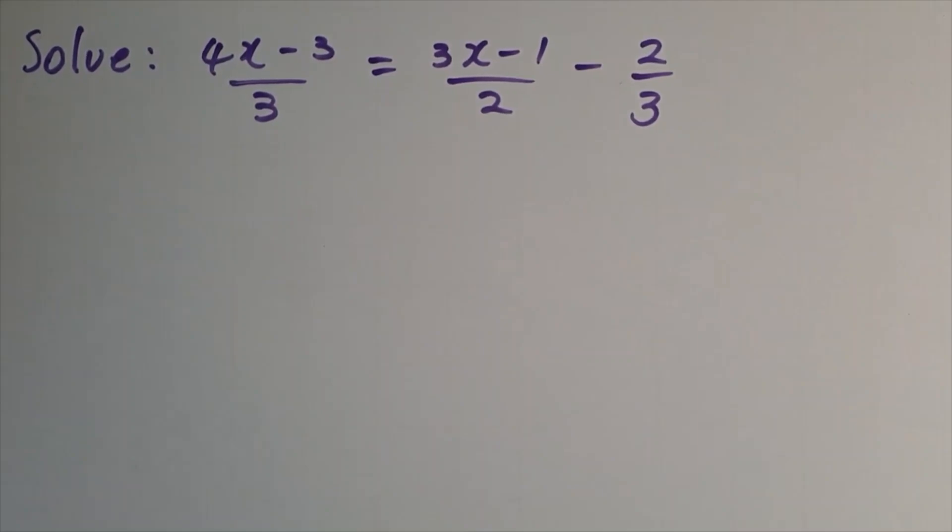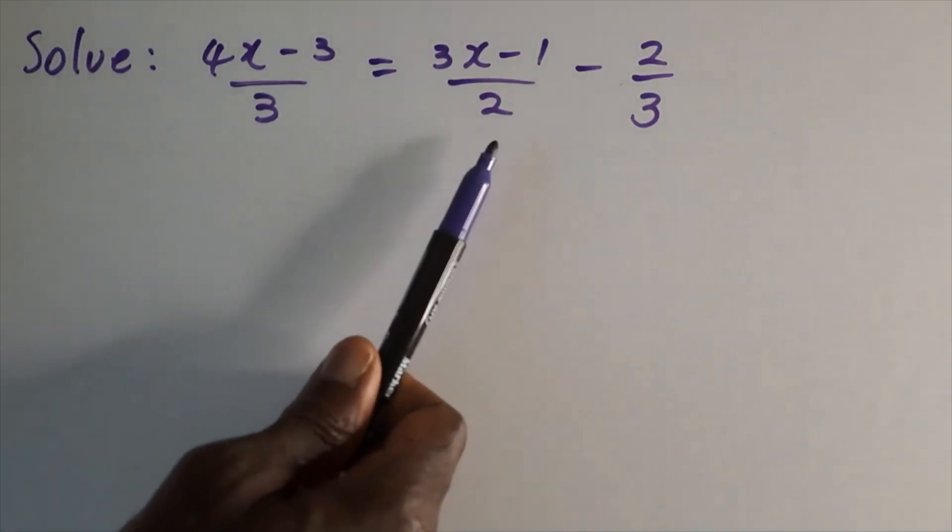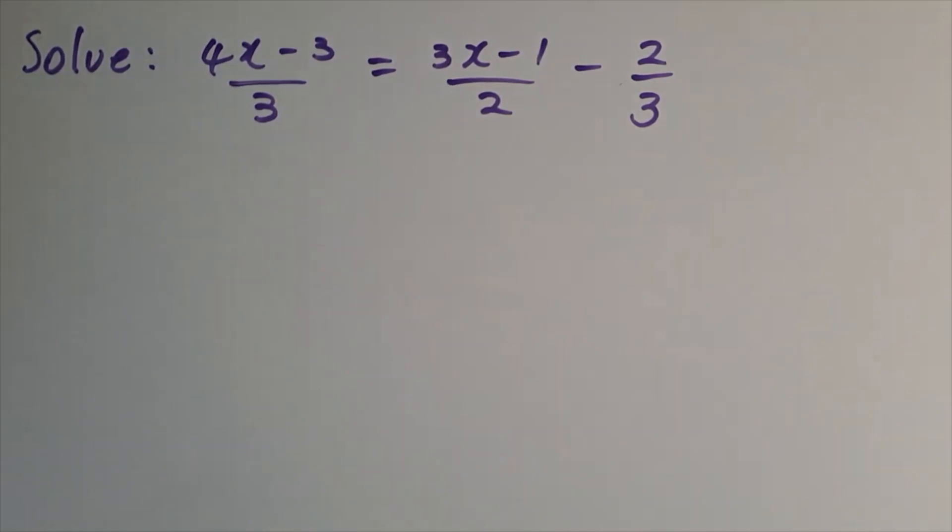The method I'm going to use here is particularly useful if your denominators are either numbers or simple expressions like 2x or 2y or something like that. So this works well.